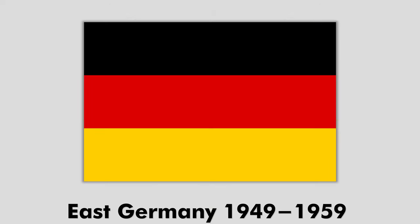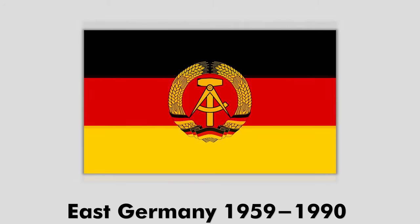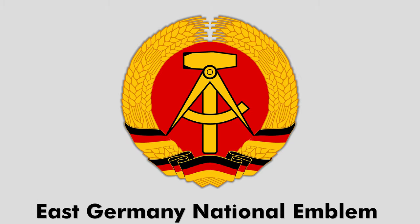East Germany also chose the black-red-gold flag in 1949, meaning West and East Germany had the same national flag. However, in 1959, the East Germans added their national emblem to the flag to create a distinction — a hammer and compass surrounded by a garland of corn, which was a symbol of the alliance between workers, farmers and intelligentsia.